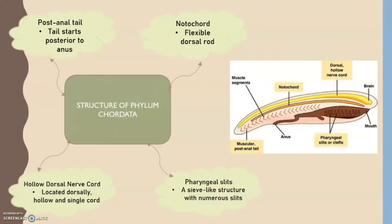Next, we have the structure of Phylum Chordata. They have a notochord, which is a flexible dorsal rod. It acts as support for the nerve cord and is replaced by the vertebral column after the embryonic stage. The next structure is pharyngeal slits, a sieve-like structure with numerous slits. These openings allow the entry of water through the mouth without entering the digestive system. Next is the hollow dorsal nerve cord, which is located dorsally as a hollow and single cord — a bundle of nerves running along the back that splits into the brain and spinal cord. The last structure is the post-anal tail, which starts posterior to the anus and is composed of skeletal muscles that help in locomotion in fish-like species.